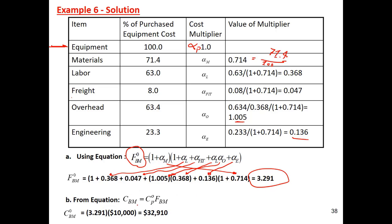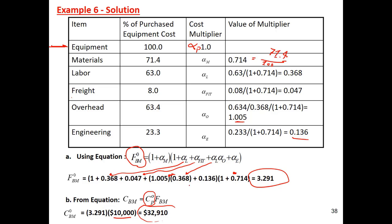Now you have the price of the heat exchanger at one bar, made of carbon steel — just the equipment, nothing else. If you want the total cost after installation, you take the equipment price of $10,000 and multiply by the bare module factor of about 3.29. That gives CBM0 equal to $32,910. So the heat exchanger costs $10,000, but once you bring it home, install it, run all the inspections, it costs almost three times more. That is the key message of this question.